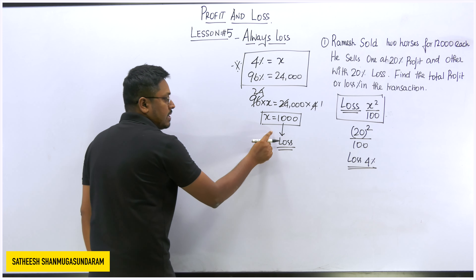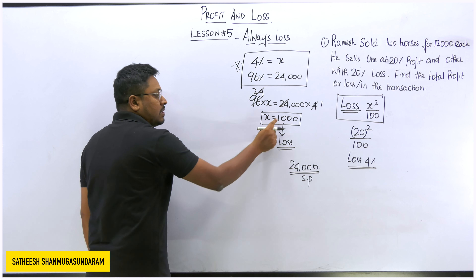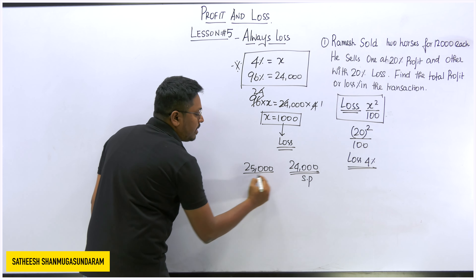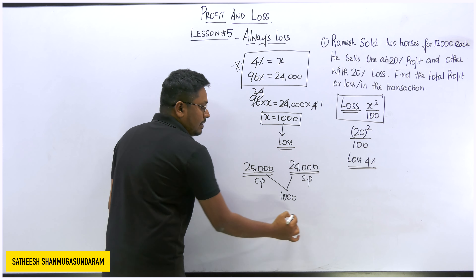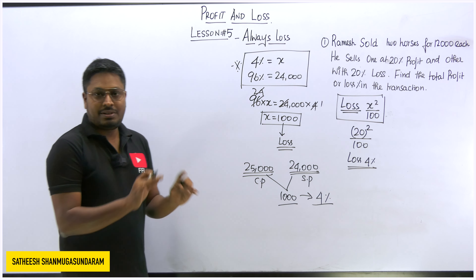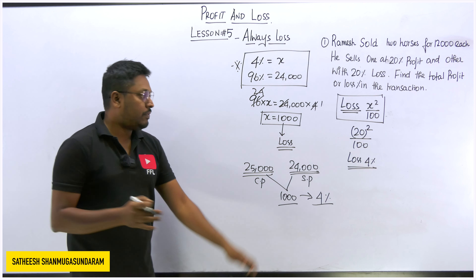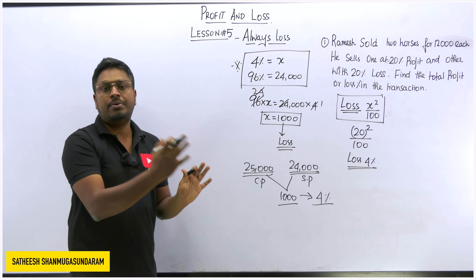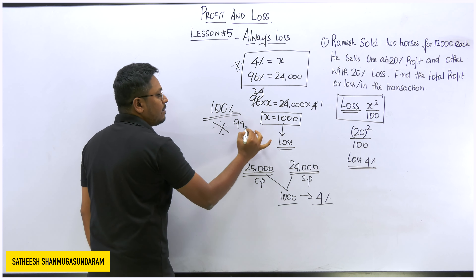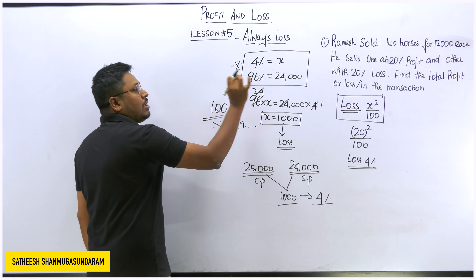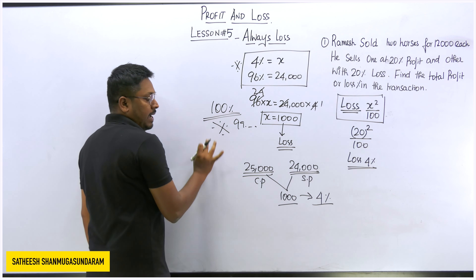So 4% equals 1,000 rupees. The selling price of the two horses is 24,000. Since he got a loss of 1,000 rupees, the cost price of the two horses is 25,000. Cost price = 25,000, selling price = 24,000, loss = 1,000 rupees, and this 1,000 rupees is 4%. This is the core concept of lesson number five. If you cannot follow, rewind and watch again — you need to understand this 100%.